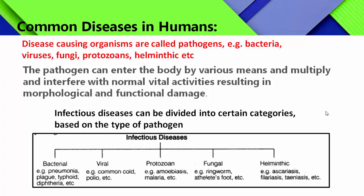Disease-causing organisms are called pathogens. The pathogens include bacteria, virus, fungi, protozoans, and helminths — members of Platyhelminthes also cause diseases. All these are included in the group of pathogens. Pathogens can enter the body by various means and multiply, interfering with the normal vital activities resulting in morphological and functional damage.